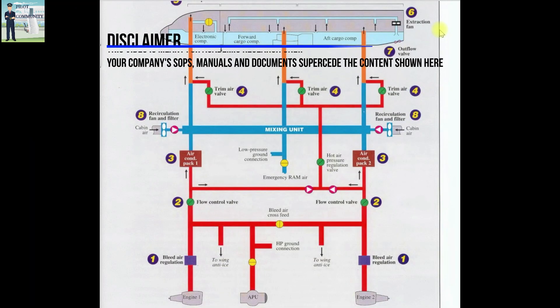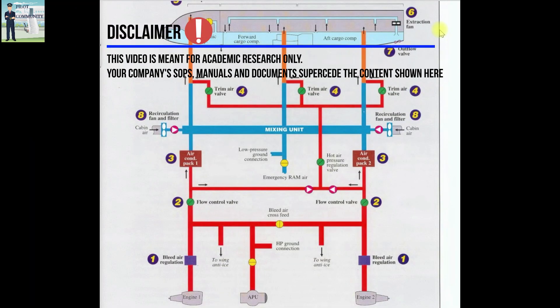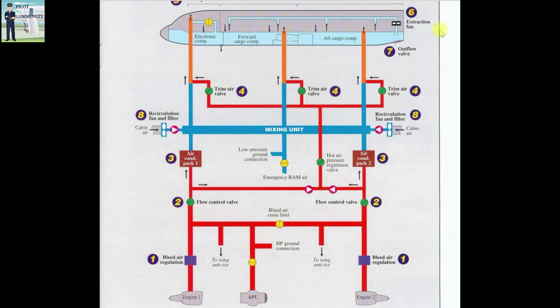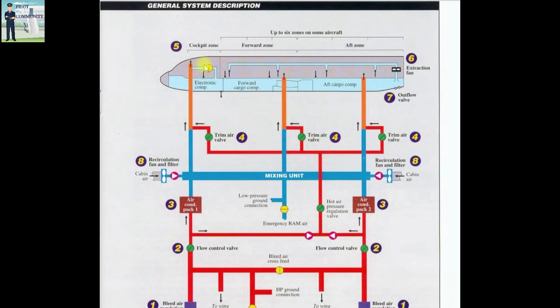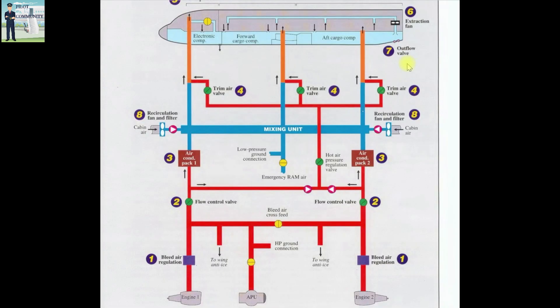Welcome to Pilots Community. In today's video we shall learn the working of the air conditioning system in an Airbus A320 aircraft. The air conditioning system of the A320 is a fully automatic system with least input required from the pilots, and it provides air renewal and maintains a constant temperature in three zones: the cockpit, the forward cabin zone, and the aft cabin zone. In wide-body aircrafts in the Airbus family, it could have up to six zones.